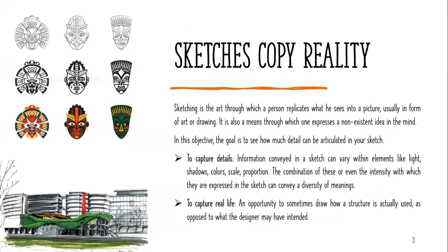A quick recap of what we said on Monday: sketches copy your reality. Different shades, gradients, and color can have a different meaning or give you more details on what you are sketching. Sketching is to capture details — the way you play with light and shadow, color, skin tone, proportion, and gradients all convey their own meaning. Sketches also capture real life; it is an opportunity to see what is in front of you the way it is used, as against the intent of the designer. It also tells you the story of what is happening in what you are sketching.